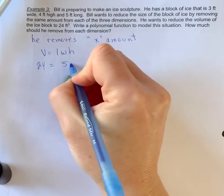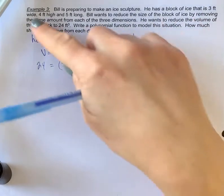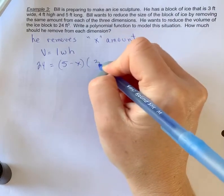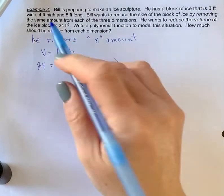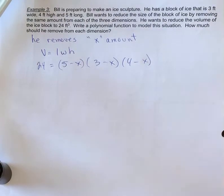My width is three, so it's going to be three minus x amount. And now my height is four, so it's going to be four minus what we remove, x amount. Now I need to solve for x.